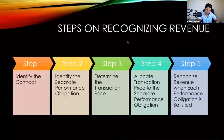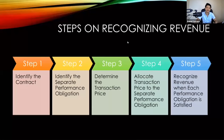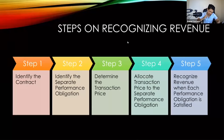Now let's move on to the steps on recognizing revenue. As mentioned, there is now a five-step model before we can recognize revenue under IFRS number 15. Let's first enumerate those steps and then discuss them one by one in detail. Step number one is to identify the contract. Revenue cannot be recognized without a contract.